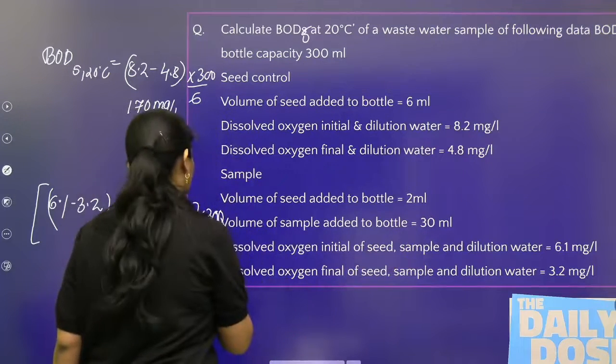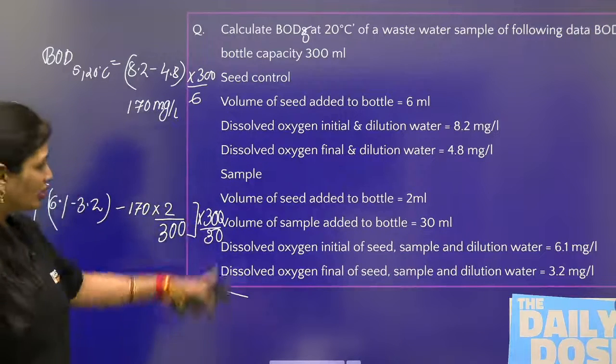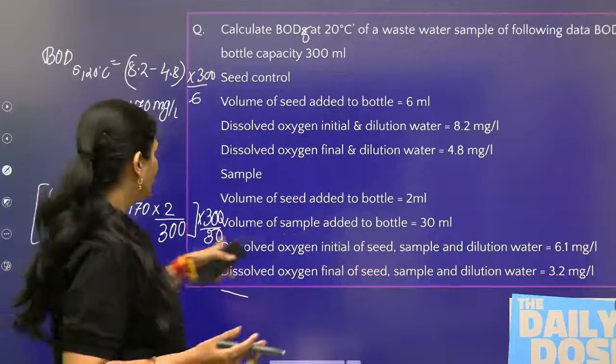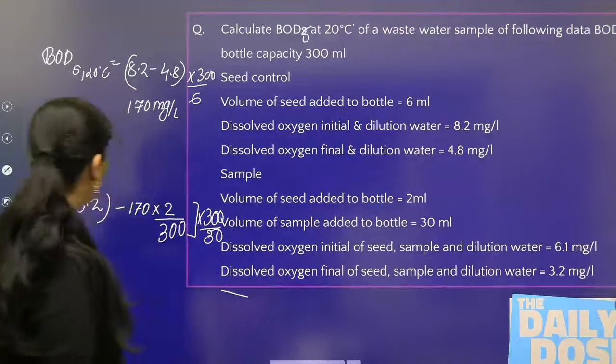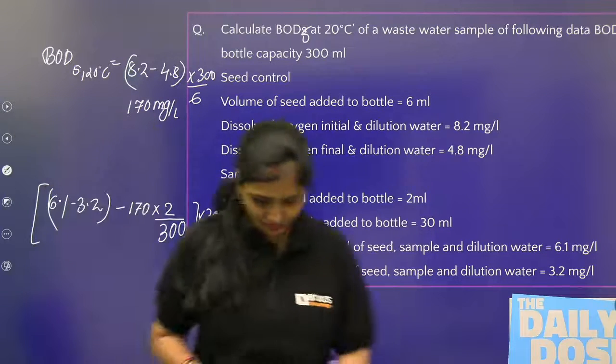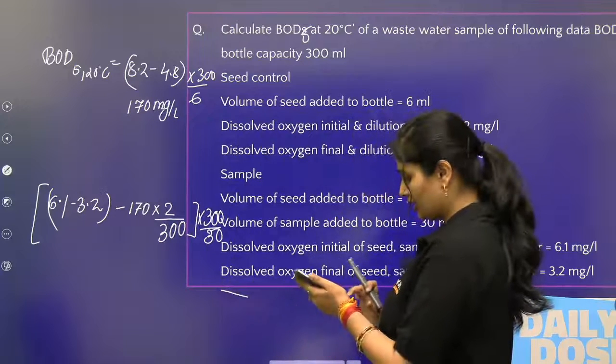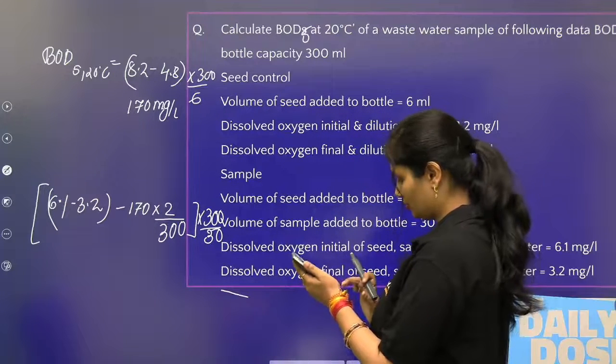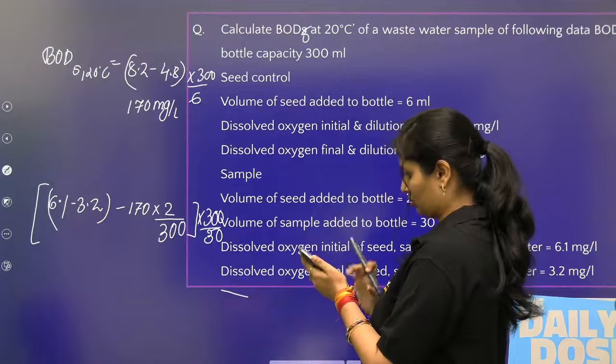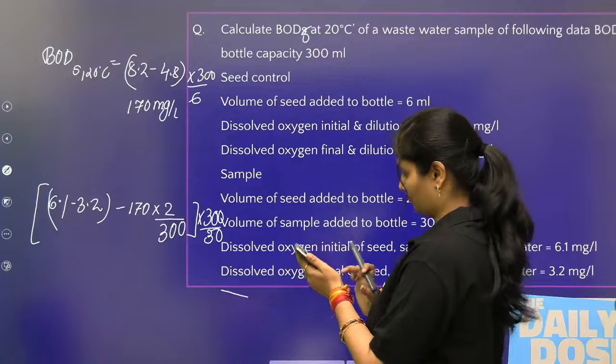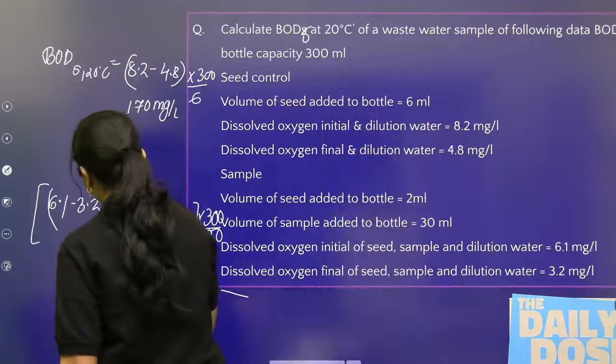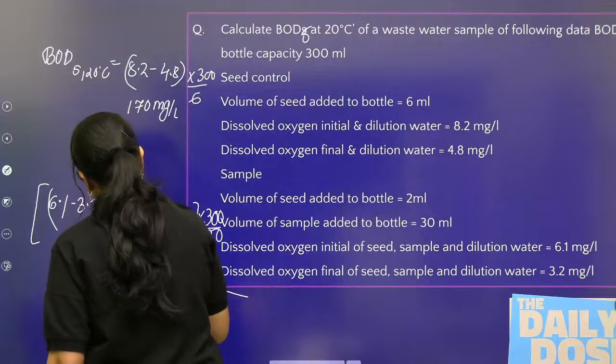You are told that the sample added is 30 ml. Total volume of sewage plus volume of water is 300 ml, and the sample added is 30 ml. So the dilution factor is simple - 300 divided by 30. Now you have to solve it and get the answer.